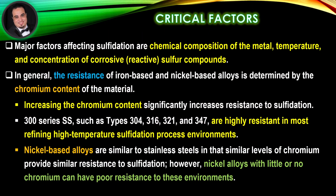Critical factors: major factors affecting sulfidation are chemical composition of the metal, temperature, and concentration of corrosive reactive sulfur compounds. In general, the resistance of iron-based and nickel-based alloys is determined by the chromium content of the material. Increasing the chromium content significantly increases resistance to sulfidation. 300-series stainless steels such as types 304, 309, 321, and 347 are highly resistant in most refining high-temperature sulfidation process environments.